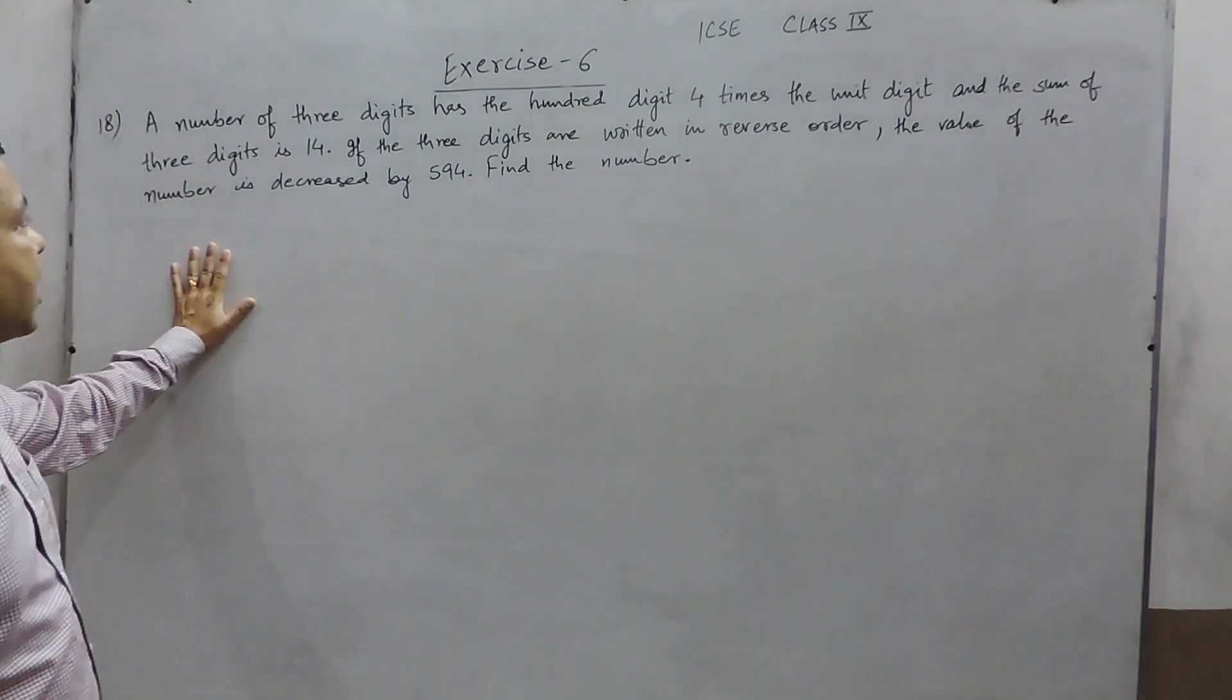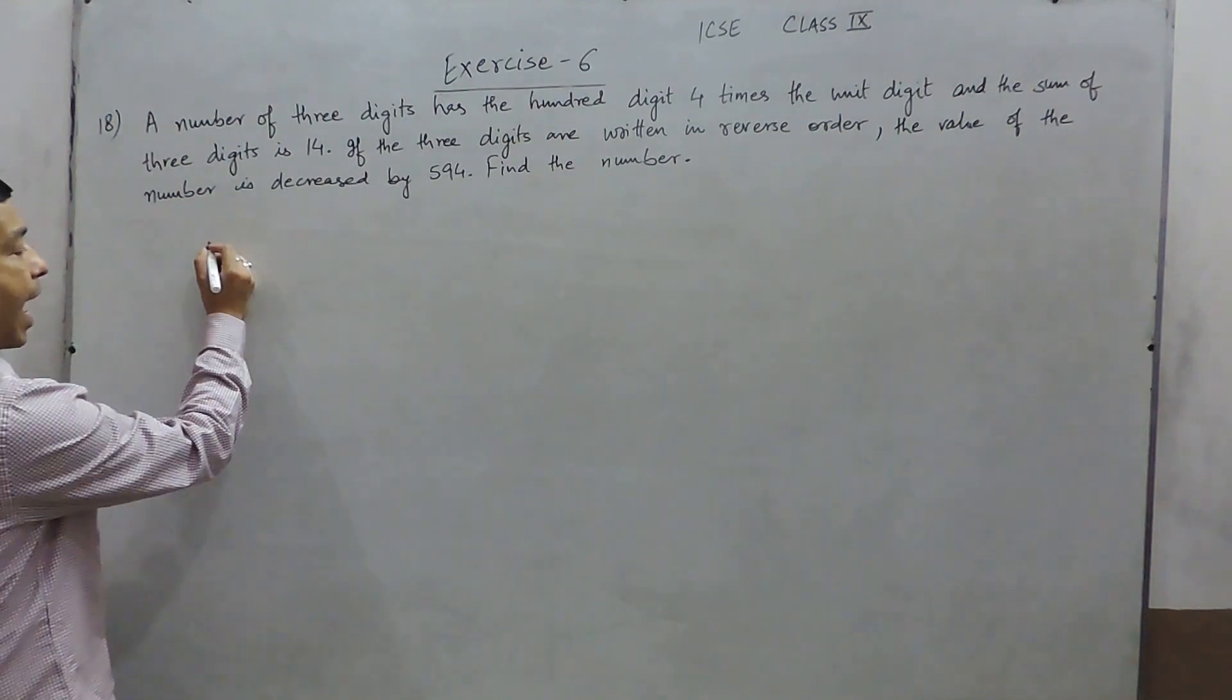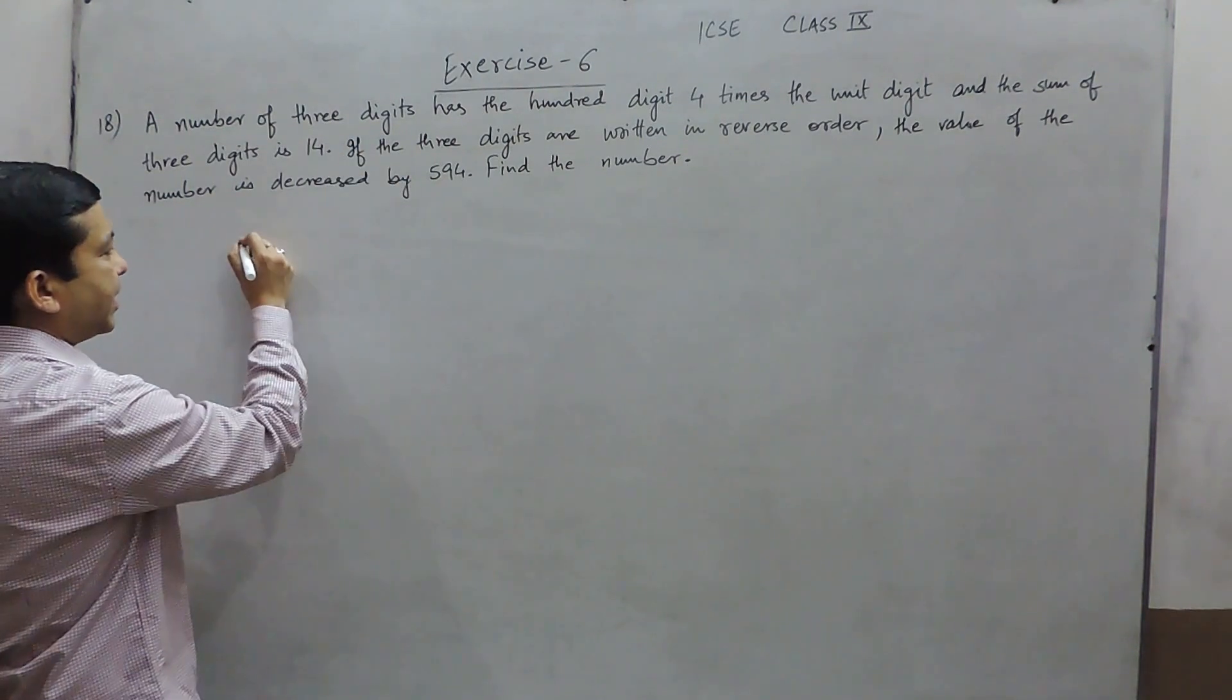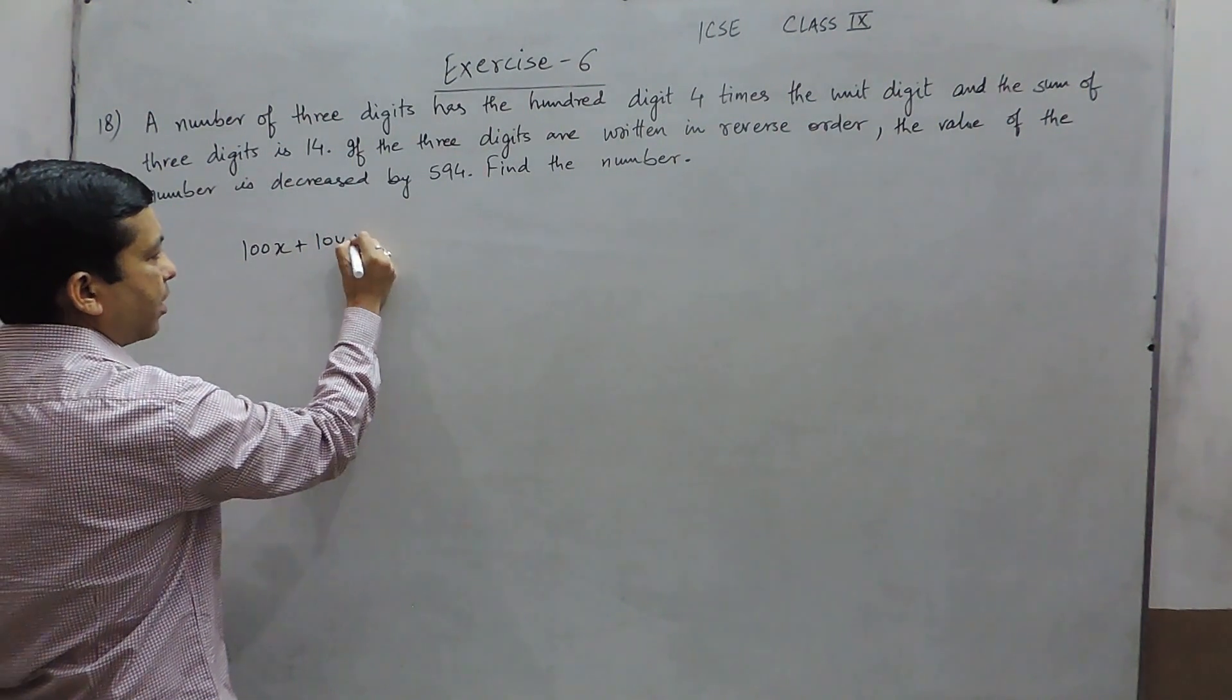Hello everyone, question number 18 is a number of 3 digits. As we know that writing a number of 2 digits is 10x plus y, so writing a number of 3 digits must be 100x plus 10y plus z.